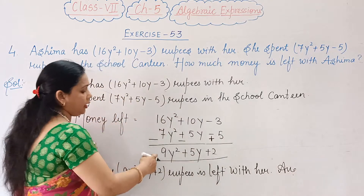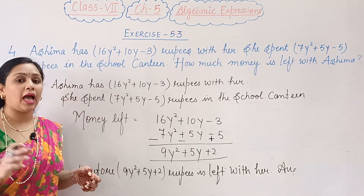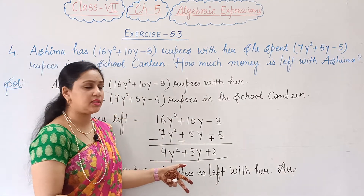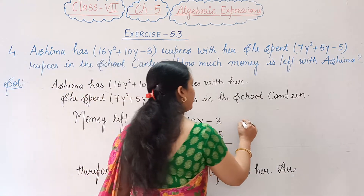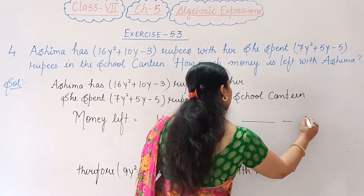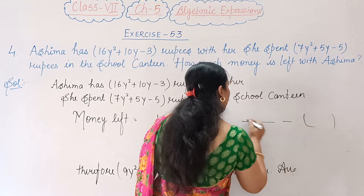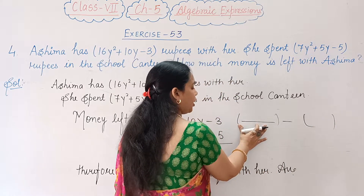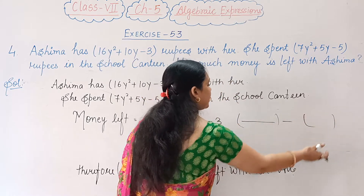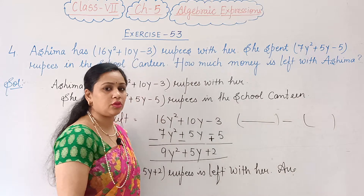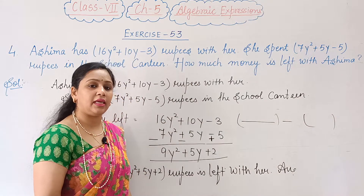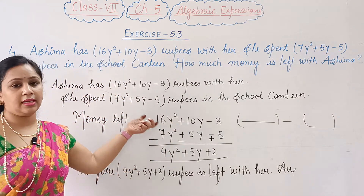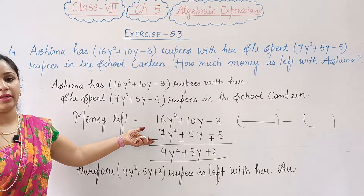Therefore 9y squared plus 5y plus 2 rupees is left with her. If you don't want to do it this way, you can do the total amount minus the second bracket. But this pattern is easy, that's why I have shown you this pattern.